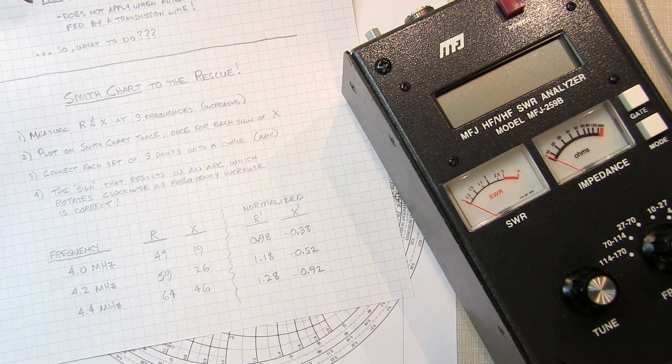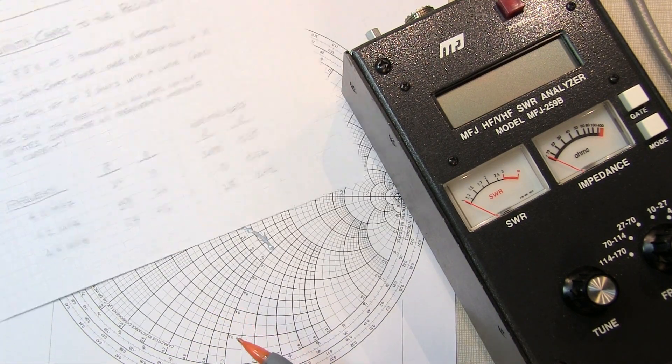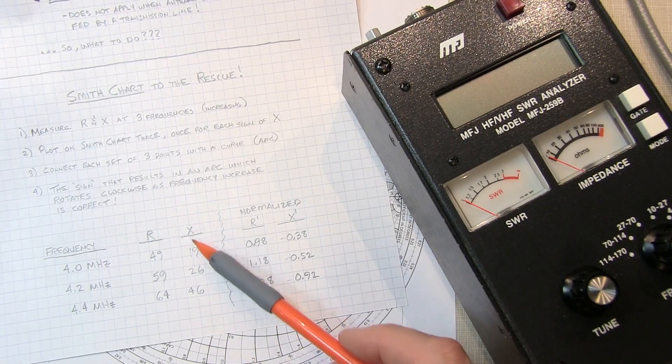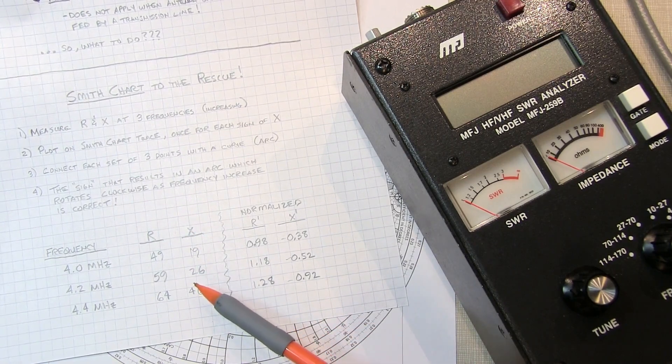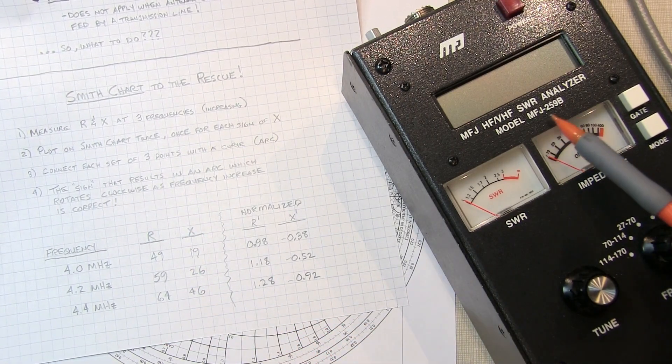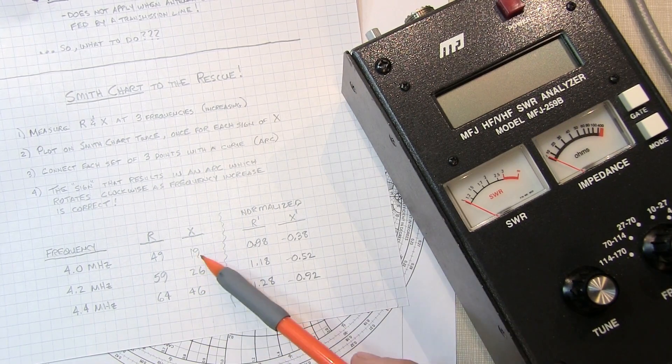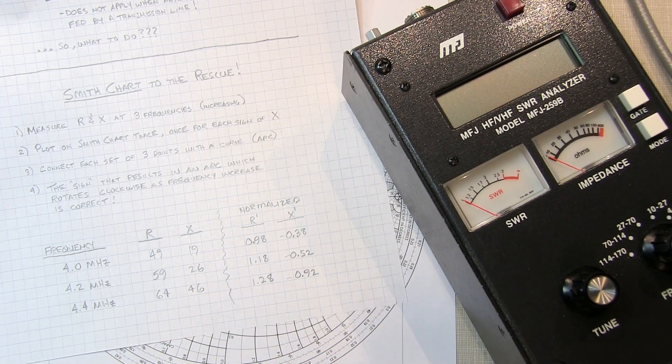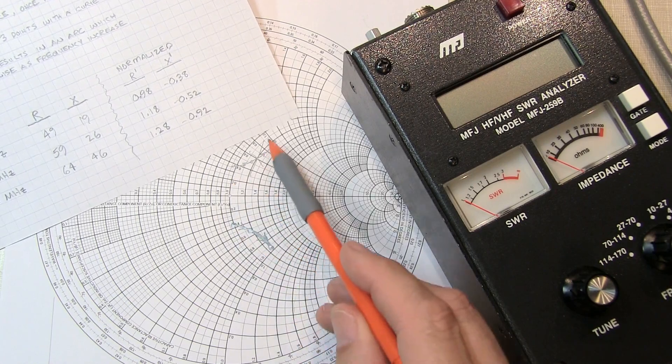In my previous video, I showed you how to use the Smith chart to determine whether the reactive component of a complex impedance reported by something like an MFJ259 is either inductive or capacitive, or positive or negative, by plotting each polarity of X and then figuring out which one of those curves traces out a clockwise path as the frequency increases.